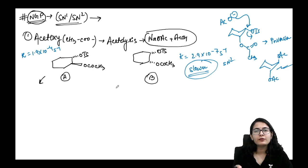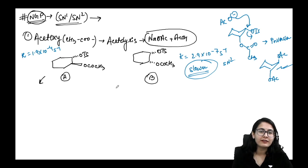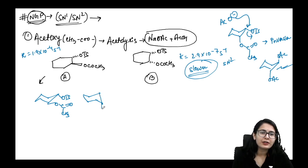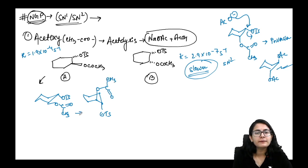NGP tries to make the reaction fast, but does it always? In molecule A, the OTs is below the plane and the acetate is on the other side. In this conformation we cannot do NGP, so we flip it to the diaxial conformation — now NGP becomes possible.